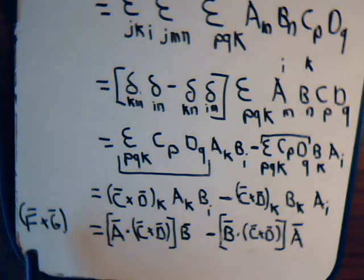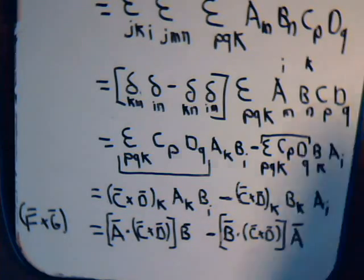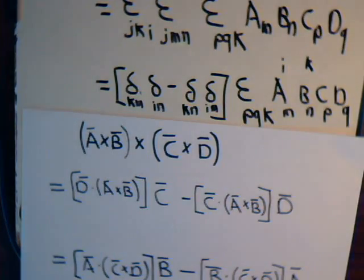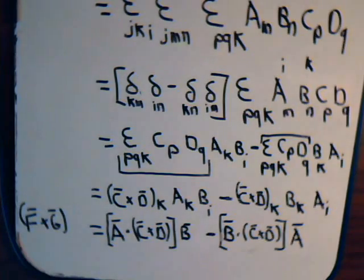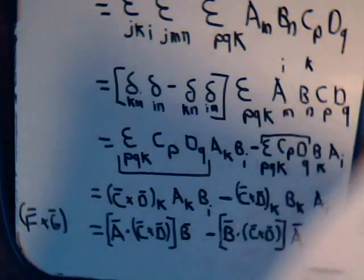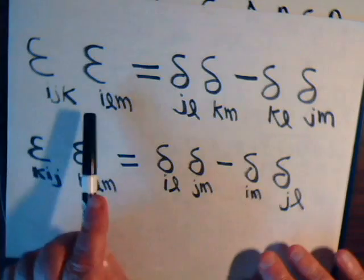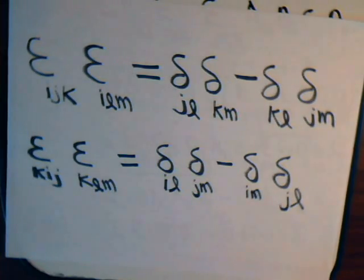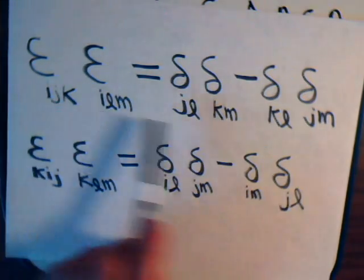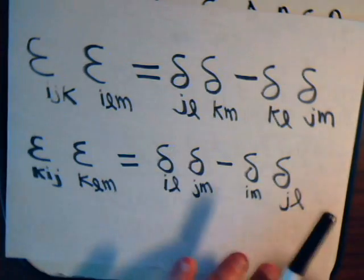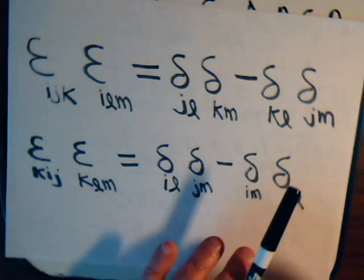And again, f cross g, that is a cross b cross c cross d. So that's it for this video. We'll have a few more demonstrations of using some version of the epsilon delta identity here. But hopefully from what we've done so far, you have an appreciation that this is a very elegant, very powerful technique once you kind of get used to how to manipulate the symbols and so forth.